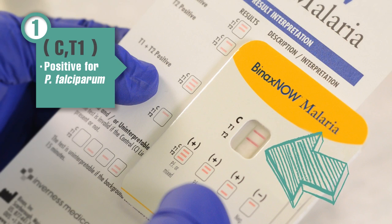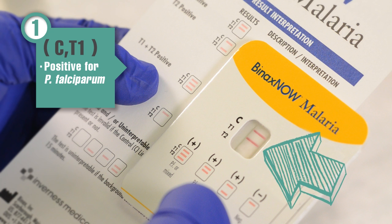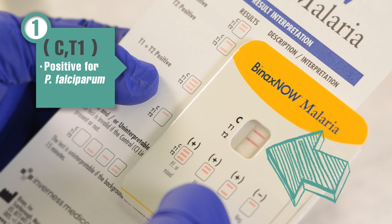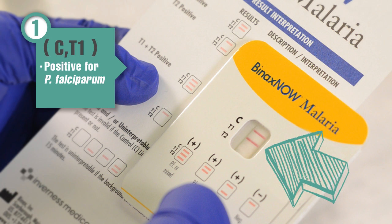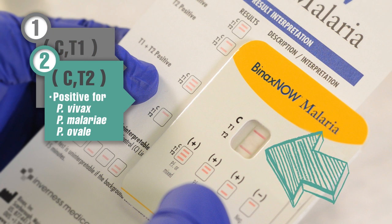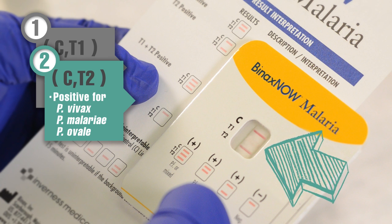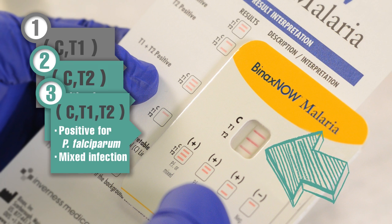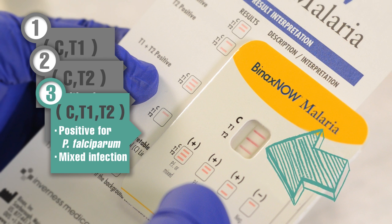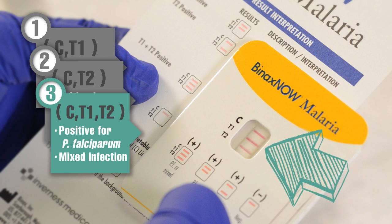For example, a line in the T1 positive row only indicates the test is positive for P. falciparum. An indicator line in the T2 positive row only indicates a positive result for either P. vivax, P. malariae, or P. ovale. A result showing lines in both T1 and T2 positive rows indicates either a positive result for P. falciparum or a possible mixed infection.